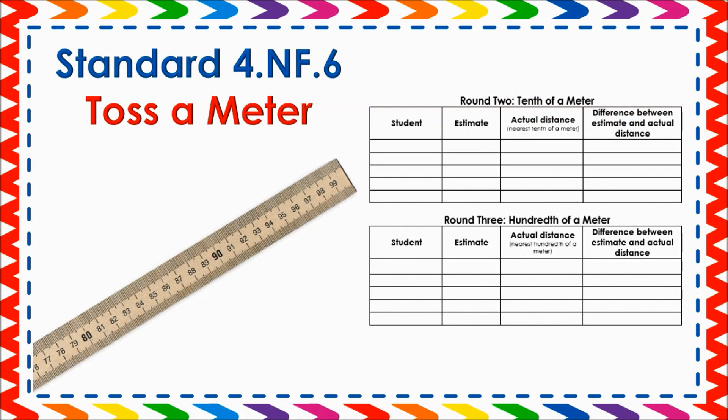Another fun activity is called Toss-O-Meter. In this activity, students compete against each other to see who can come closest to tossing a cotton ball or paper ball a distance of one meter. In one round, they measure the distances to the nearest tenth of a meter; in another round, to the nearest one-hundredth of a meter. Students should record their tosses as a fraction and decimal, and be sure to explain that a meter stick represents one whole meter and the numbers on the stick represent fractions of that meter.